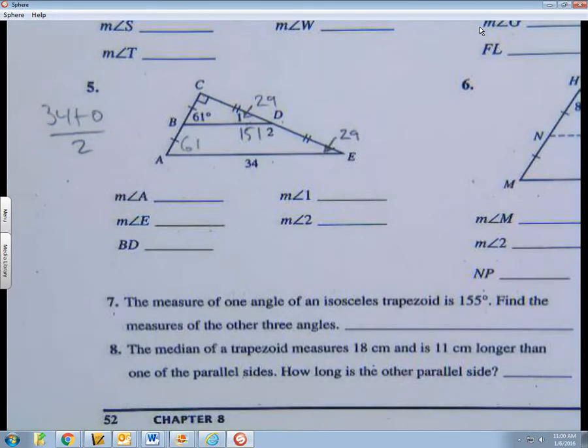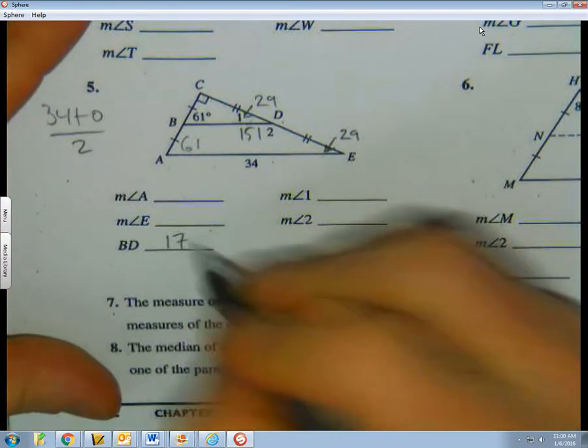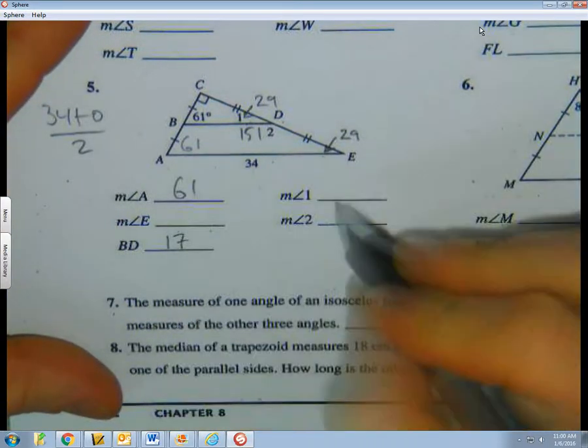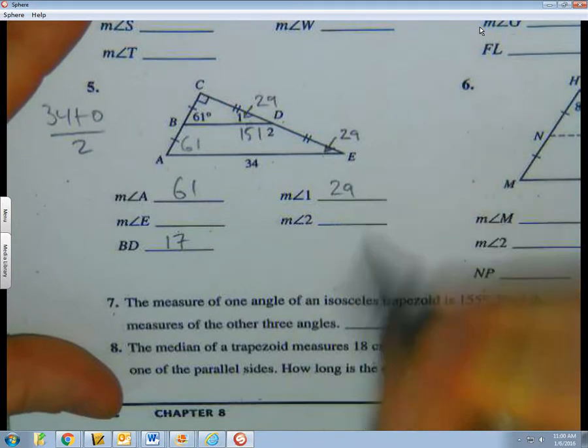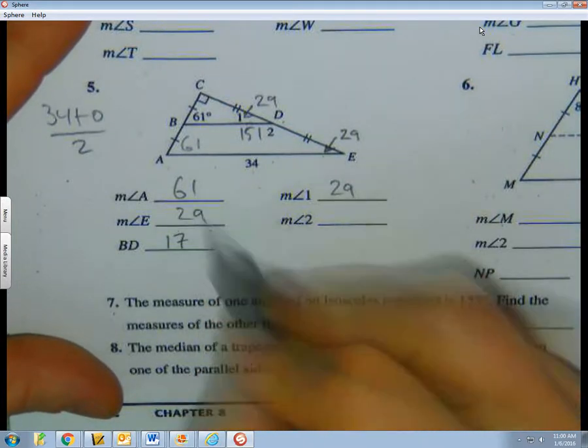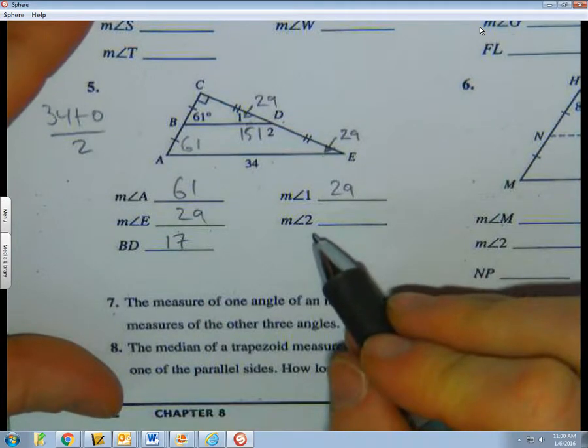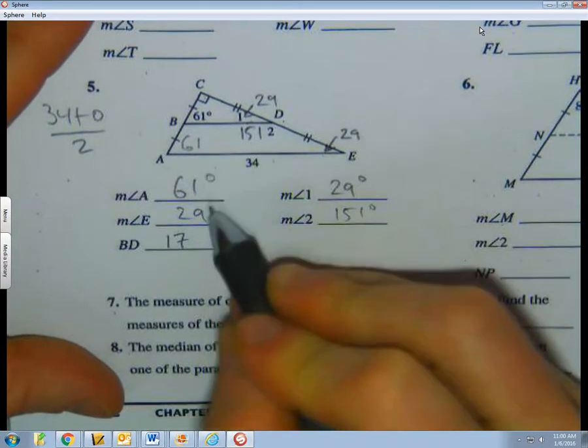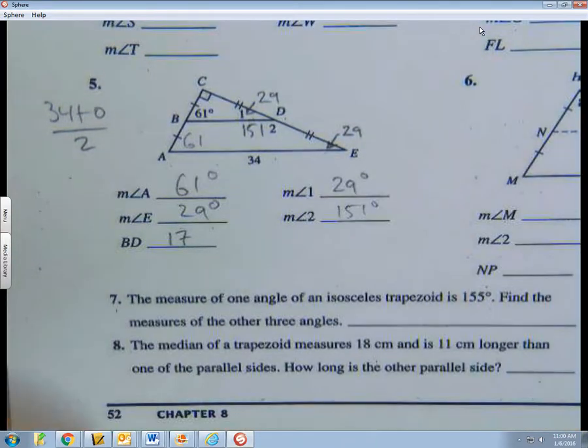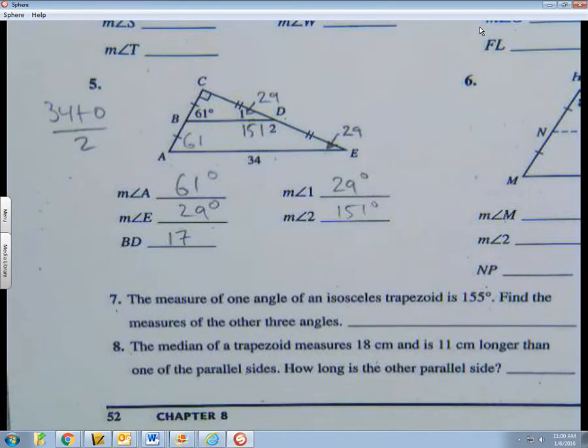So fill it in. 61, 1 is 29, 2 is 29, degrees, degrees, degrees, degrees, segment length. I just want to get you rolling on this, and then I'm going to leave it alone.